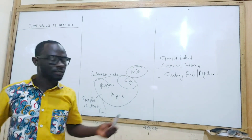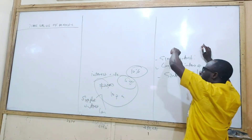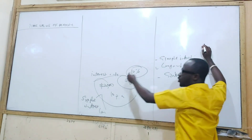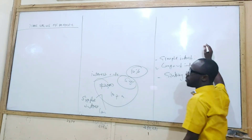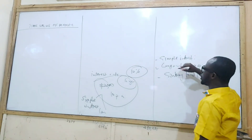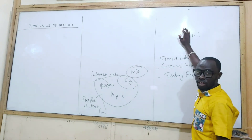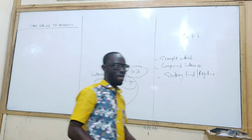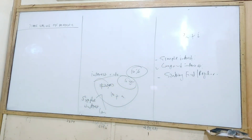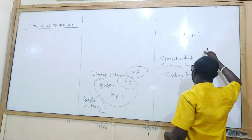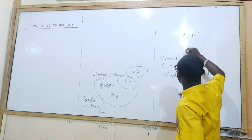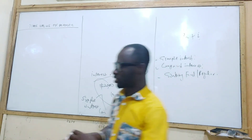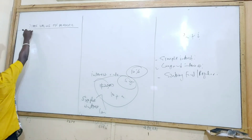With simple interest, the interest is always charged on the principal — irrespective of the number of years. But with compound interest, the subsequent interest is always charged on the principal plus the interest for that period. So with simple interest you calculate interest on the principal; with compound interest you calculate interest on the principal plus the interest itself. Let's begin with simple interest.